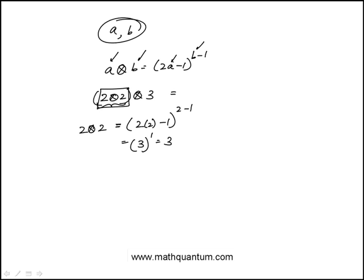Now we replace this with 3, which is equivalent to 3 cross 3. We apply the rule again where a is 3 and b is 3. So this would be 2 times 3 minus 1, to the power of 3 minus 1.